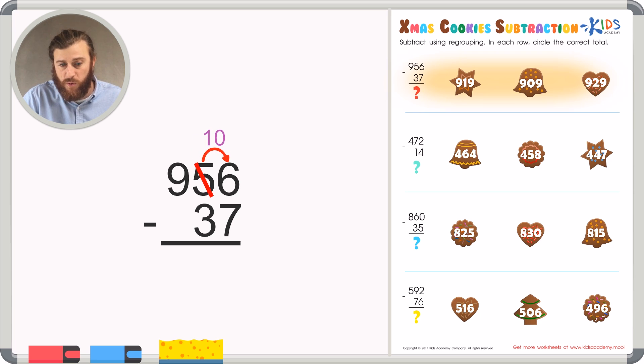50, or 5, will become 4. And that 10 that we borrowed will add to 6. And 6 plus 10 is 16. So our 6 becomes 16.